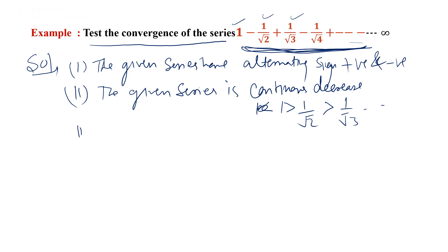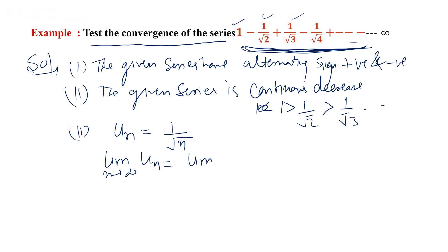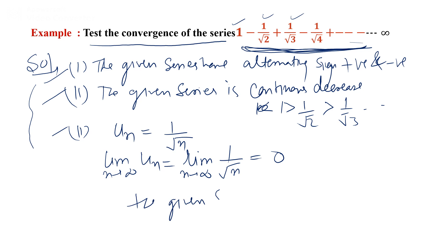Third, write the nth term: u(n) = 1/√n. Apply the limit as n tends to infinity of 1/√n. We get 0. All three conditions of the Leibniz test are fulfilled. Therefore, the given series is convergent.